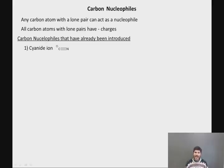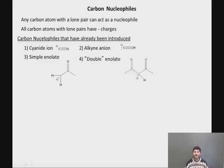The cyanide ion, CN-, we've looked at the alkyne anion. We've looked at the enolate, in which you have a minus charge on a carbon next to a carbonyl. Well, I call this one the simple enolate. And then there's also what I like to call the double enolate, where you have a minus charge on a carbon that is between two carbonyls.